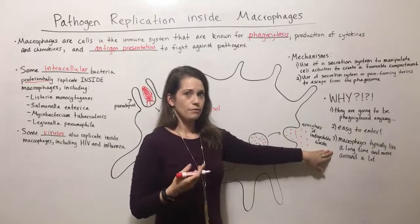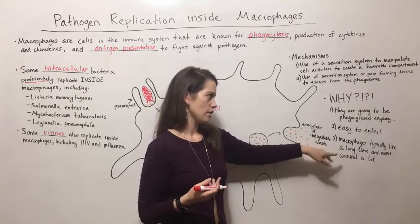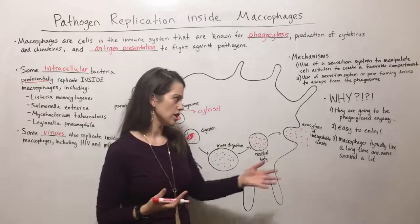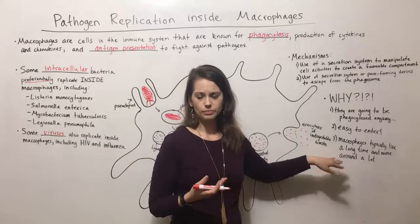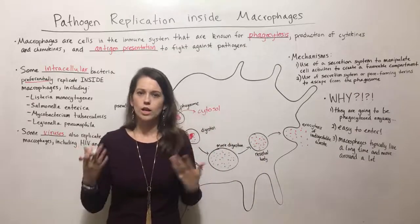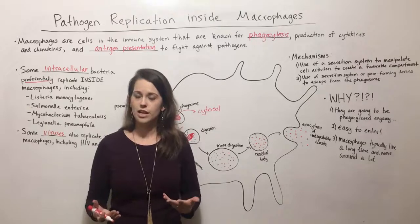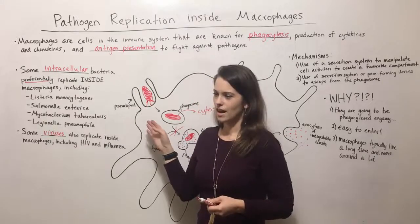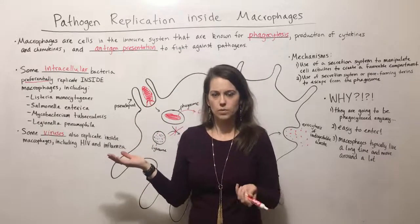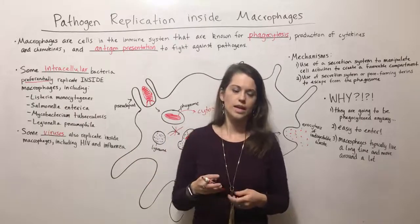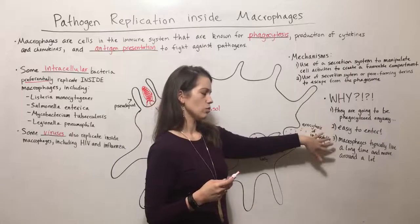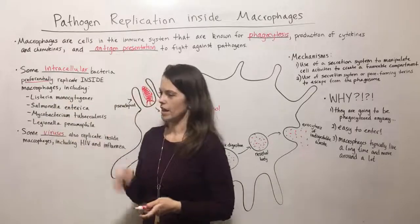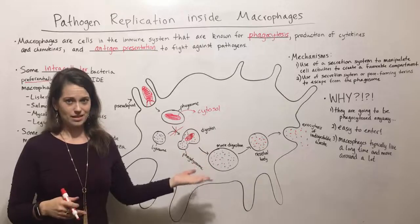Another reason why it might be beneficial to replicate inside macrophages is that macrophages are typically very long-lived. They live a long time in the body, which gives a stable replication niche for these pathogens. Also, macrophages move around a lot — they travel through the bloodstream to get to different points of infection. So a pathogen that gets into a macrophage can essentially ride the bus all around the city, using the macrophage to travel anywhere else in the body. Scientists think these three reasons explain why some bacteria prefer to replicate inside a cell otherwise designed to kill them.